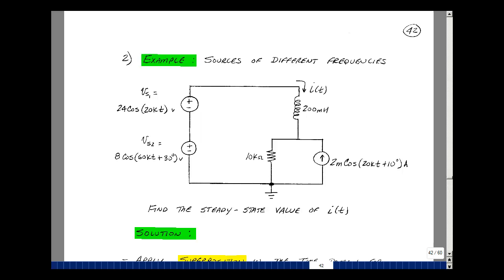Given this example with three sources where we have two different values of omega, 20 kiloradians per second here and here, and this one is 60 kiloradians per second. So we solve for the current IFT in steady state. Well, it might appear on the surface that we can't solve this problem because we have two different values of omega.